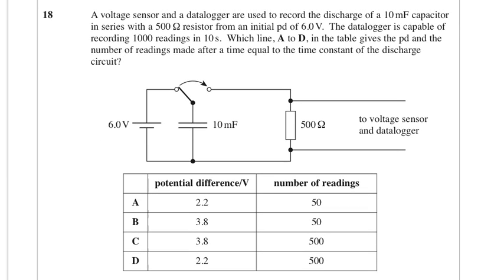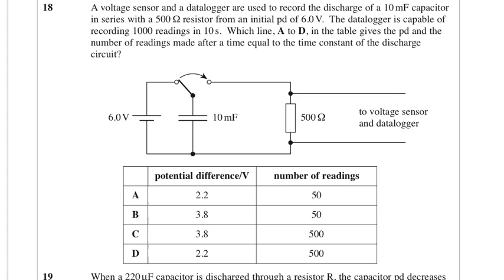A voltage sensor and data logger are used to record the discharge of a 10 millifarad capacitor in series with a 500 ohm resistor from an initial PD of 6 volts. It can do 1000 readings in 10 seconds. Which line gives the PD and the number of readings made after a time equal to the time constant of the discharge circuit? The time constant is RC, so 10 times 10 to the minus 3 times 500, so that's 5 seconds, so it's going to make 500 readings.